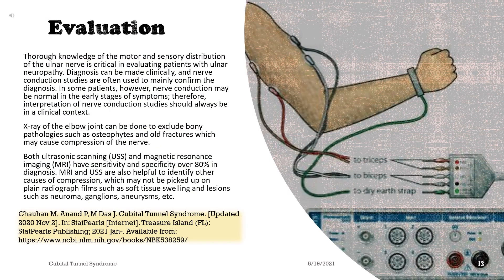Evaluation. Thorough knowledge of the motor and sensory distribution of the ulnar nerve is critical in evaluating patients with ulnar neuropathy. Diagnosis can be made clinically, and nerve conduction studies are often used to confirm the diagnosis; however, nerve conduction may be normal in early stages, so interpretation should always be in clinical context. X-ray of the elbow can exclude bony pathologies such as osteophytes and old fractures. Both ultrasound scanning and MRI have sensitivity and specificity over 80% and are also helpful to identify other causes of compression such as soft tissue swelling, neuroma, ganglions, and aneurysms.